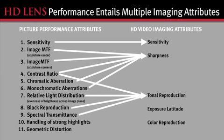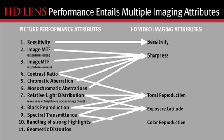And the change in resolution as you go to picture extremities, the monochromatic aberrations of the lens, and the chromatic aberrations of the lens, all bear on the ultimate sharpness of that lens.